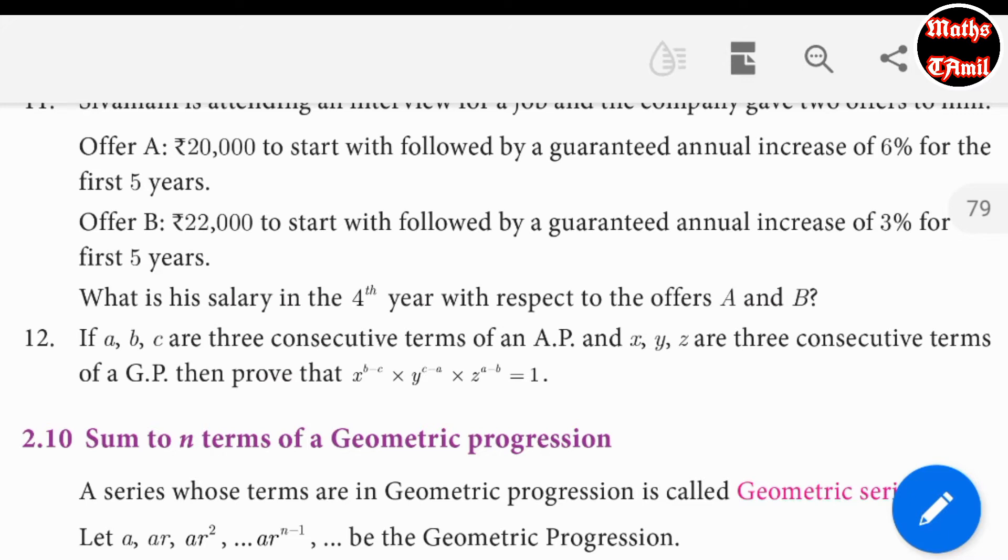If A, B, C are three consecutive terms of an A.P. and X, Y, Z are three consecutive terms of a G.P., then prove that X to the power B minus C, times Y to the power C minus A, times Z to the power A minus B is equal to 1. Let's solve this problem using logarithms.